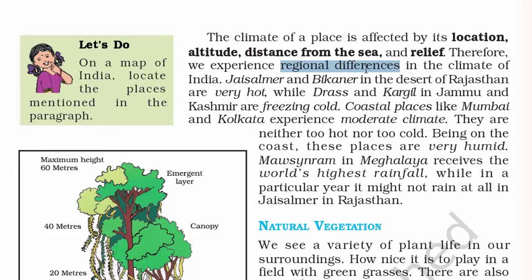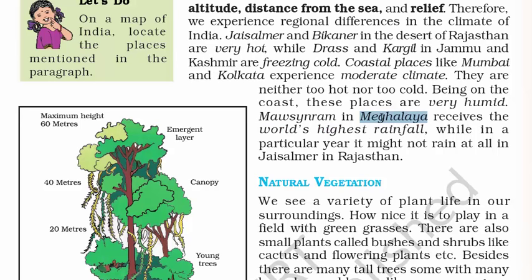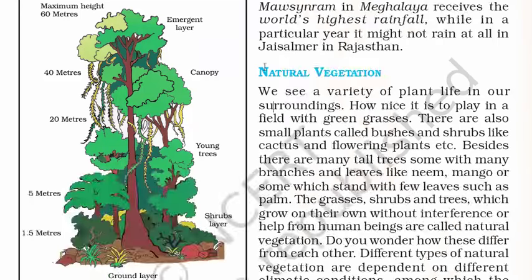The tropical region refers to places that fall between the Tropic of Cancer and the Tropic of Capricorn. The climate of a place is affected by its location, altitude, distance from the sea and relief — these four factors determine the climate of a place. For example, Jaisalmer and Bikaner in Rajasthan are very hot, while Leh and Kargil in Jammu and Kashmir are freezing cold. Coastal places like Mumbai and Kolkata experience moderate but very humid climate. Meghalaya receives the highest rainfall in India.